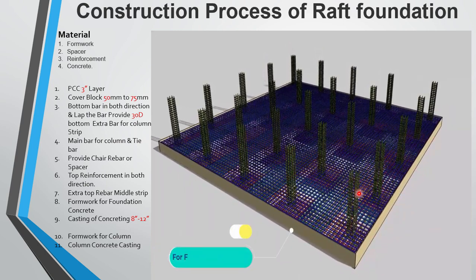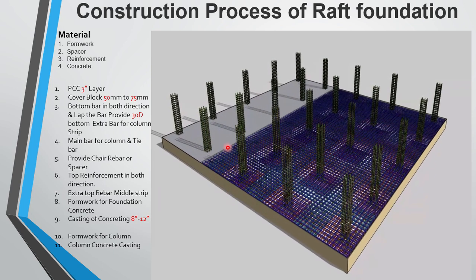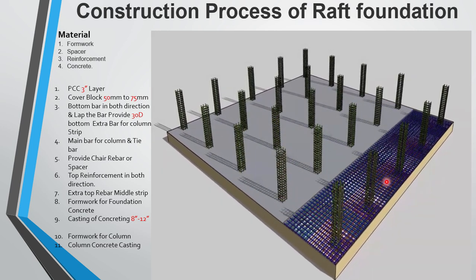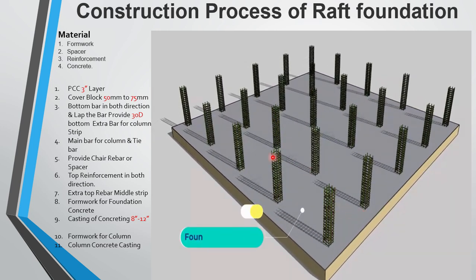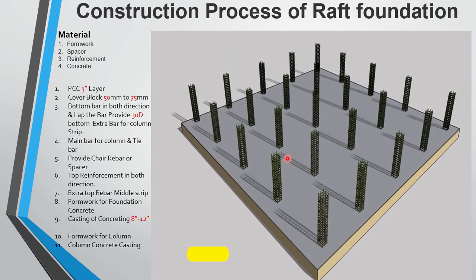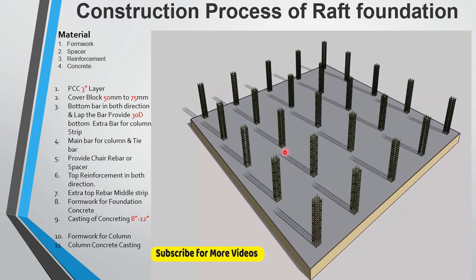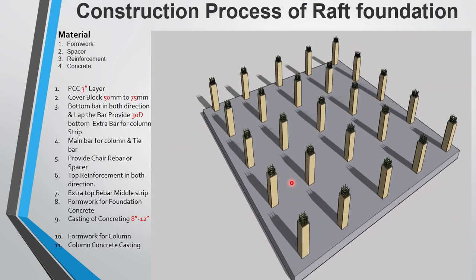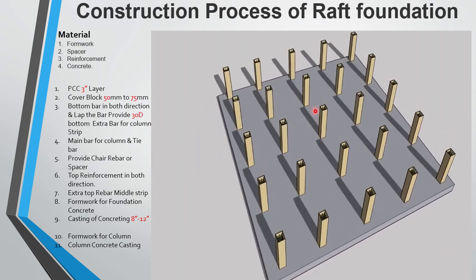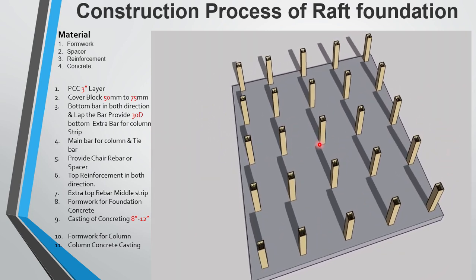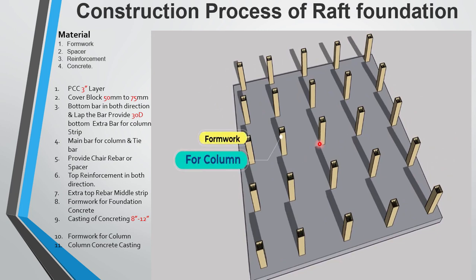Then we provide the extra bar for the column strip. This is the extra bar for the column strip, completing the top reinforcement layout.